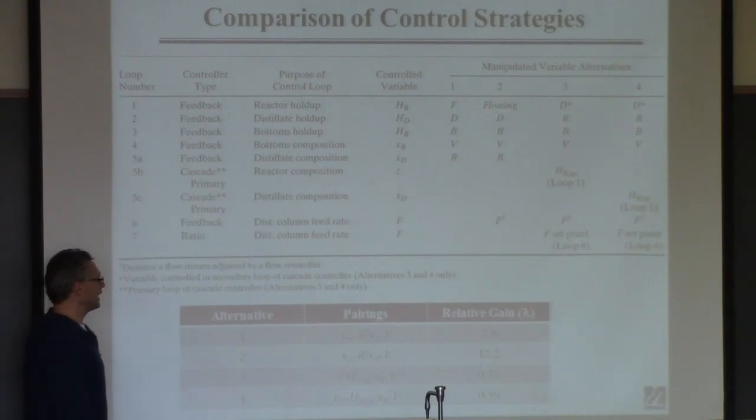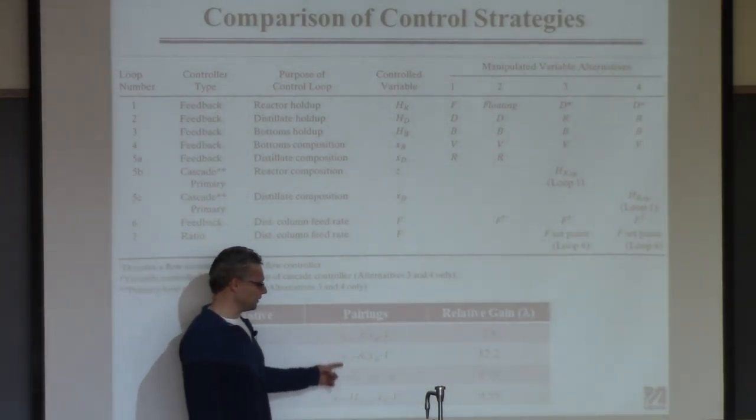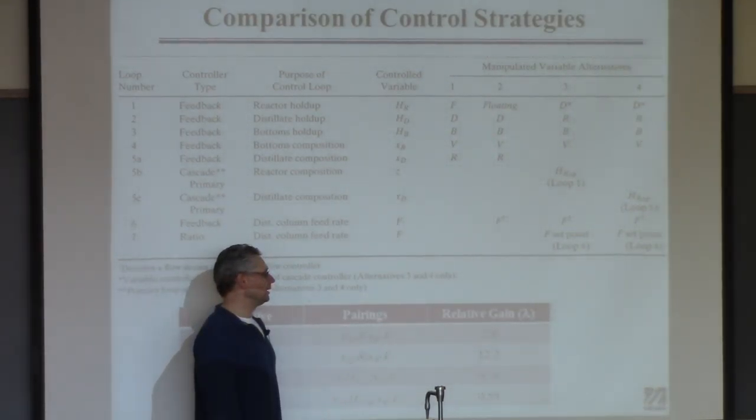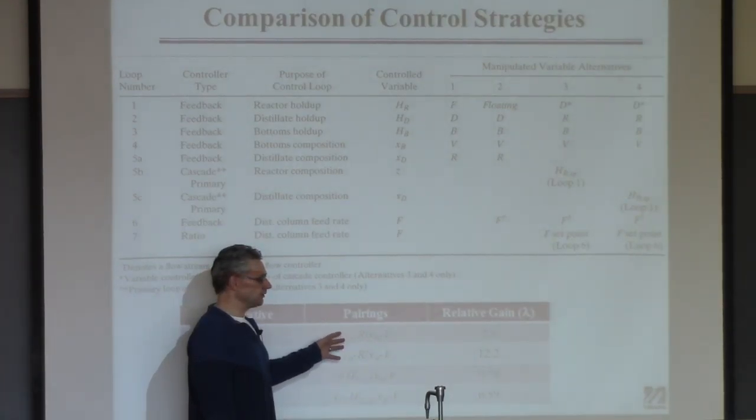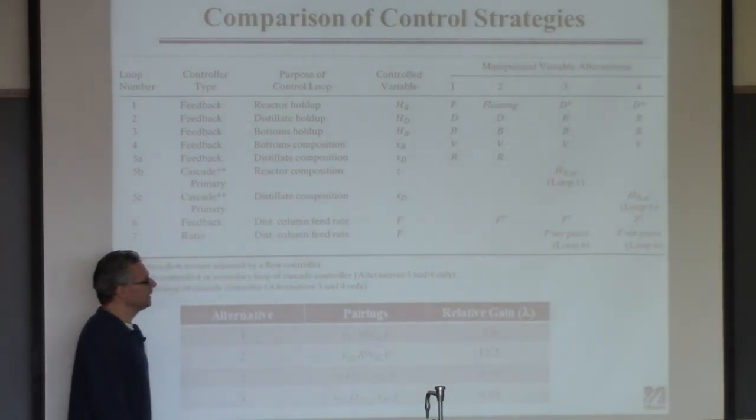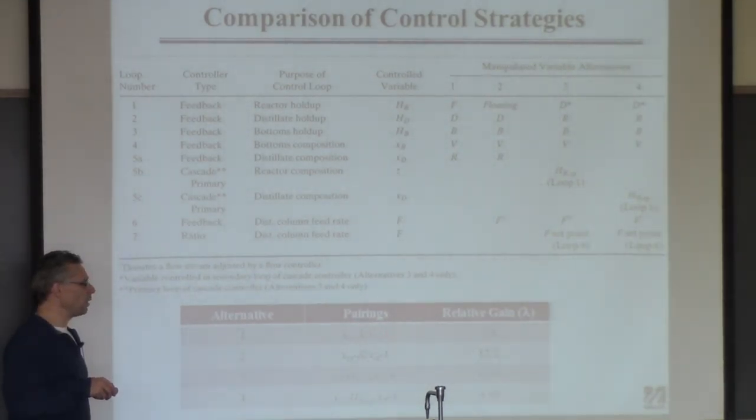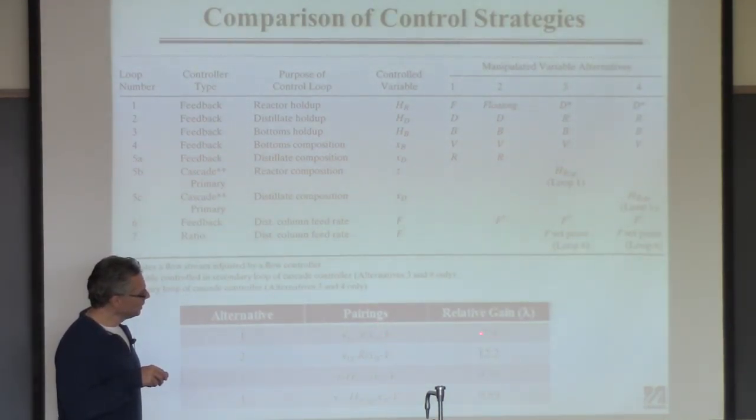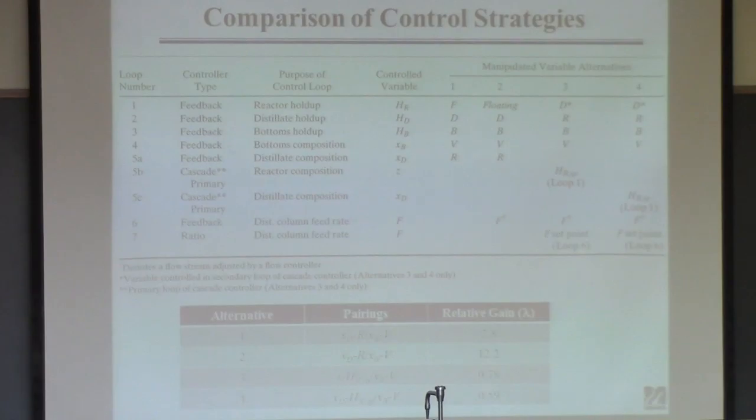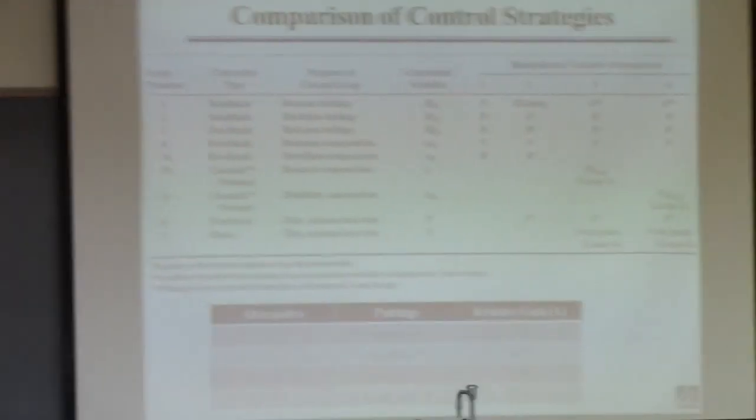So this analysis is meant to say if you just look at these two controllers, this is a simple two by two system, and you were to look at the RGA for this two by two system, you remember an RGA of one is good. You can see that for this configuration the RGA is about three. That's a lot bigger than one, that's probably not great.